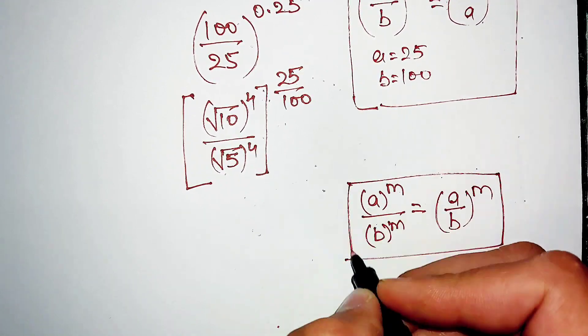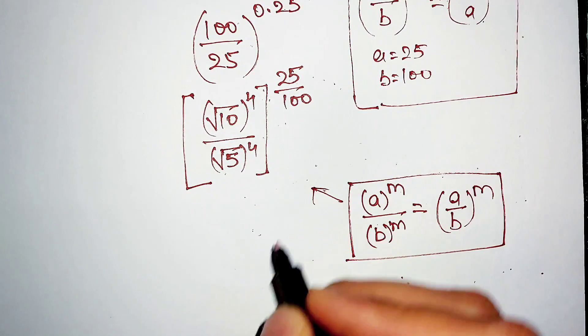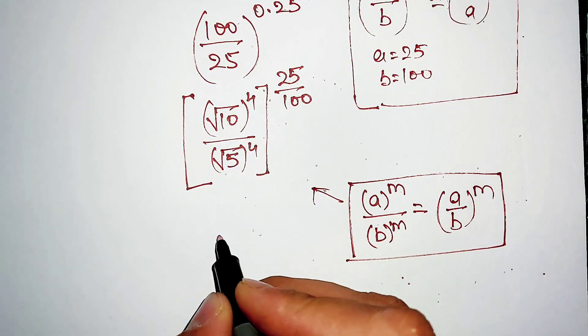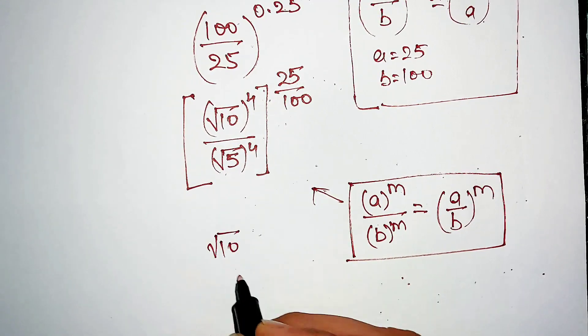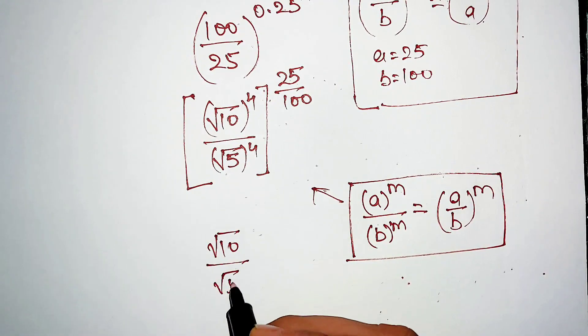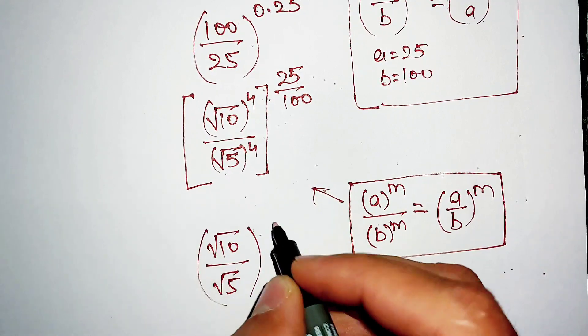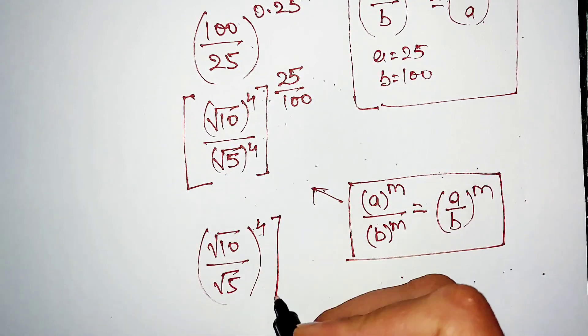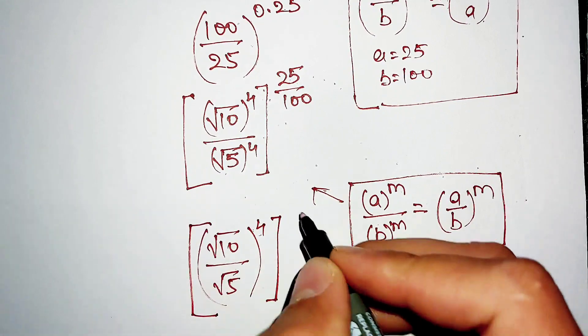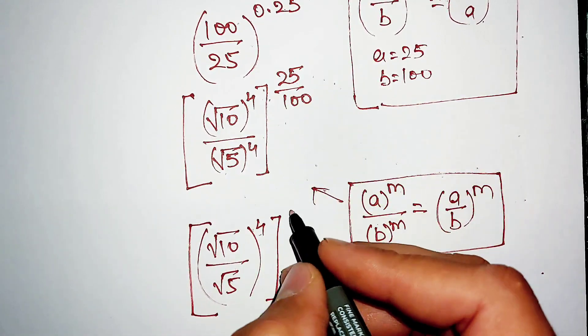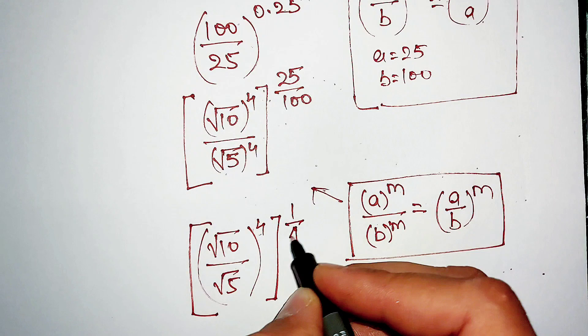Applying this exponential property here, what we get is (square root of 10 divided by square root of 5)^4, and the exponent 25/100 becomes 1/4. The 4 in the exponent and the 4 from the root will cancel out.